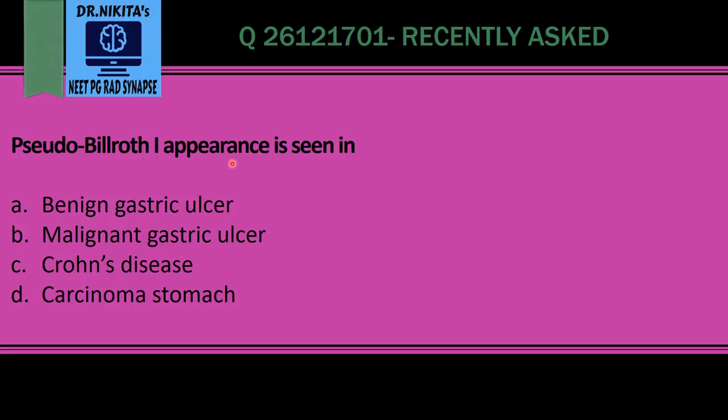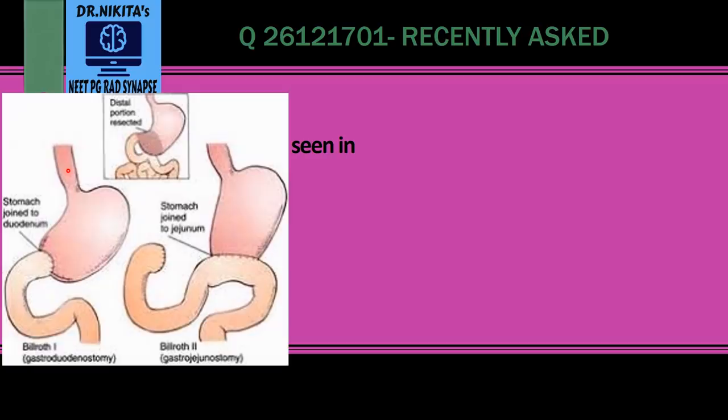Pseudo-Billroth-1 appearance is seen in which condition? First, let us see what a Billroth surgery is. In a Billroth surgery, the distal stomach is resected. If it is anastomosed to the duodenum — that is gastroduodenostomy — it is called Billroth-1. And if it is anastomosed to the jejunum — that is gastrojejunostomy — it is called Billroth-2.